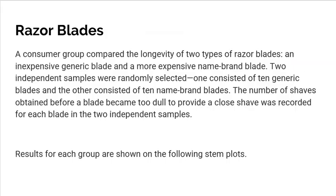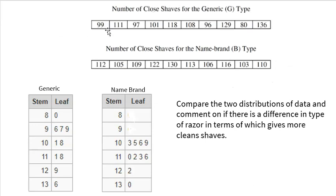The next example deals with razor blades. A consumer group compared the longevity of two types of razor blades: an inexpensive generic blade and a more expensive name brand blade. Two independent samples were randomly selected — 10 generic blades and 10 name brand blades. The number of shaves obtained before a blade became too dull to provide a close shave was recorded for each blade. Results are shown in the following stem plots. You can compare the two distributions and comment on whether there's a difference in which type of razor gives more clean shaves.